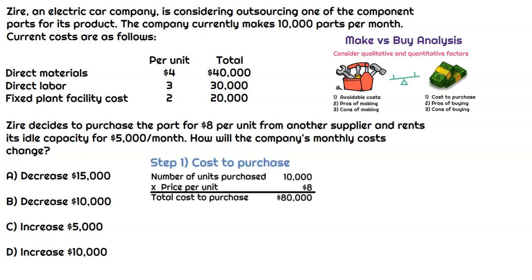Since Zyre decided to purchase the part, it's for $8 and they need 10,000 parts per month. So step one is just to figure out what the total cost to purchase those parts is going to be. It's just the number of units purchased, which is 10,000 times $8 per unit. So the cost of purchase is $80,000.